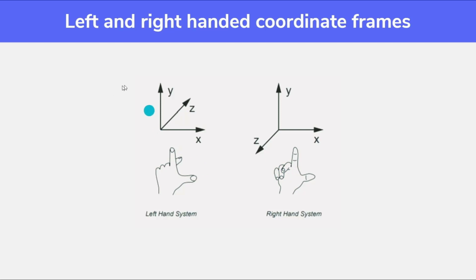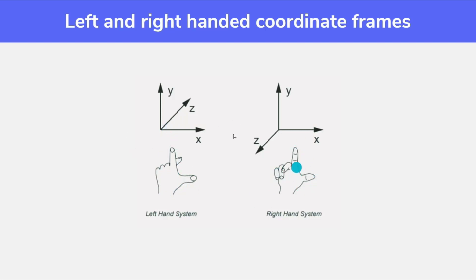On the other hand, if we look here, the z-axis that is getting away from us can only be represented using the left hand, where the middle finger is getting away from us. The only thing we have to take care of is that the correct axis should be represented with the correct finger. If it is so, then we can say that this is the left-hand system and this is the right-hand system.